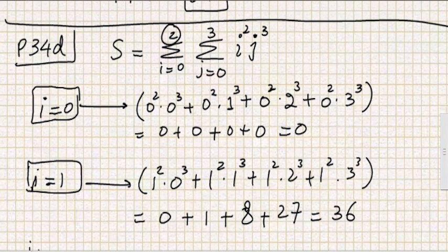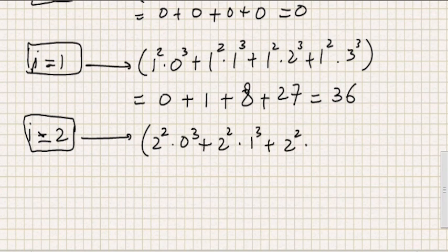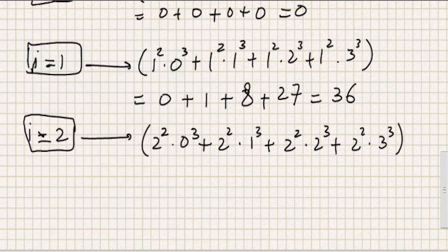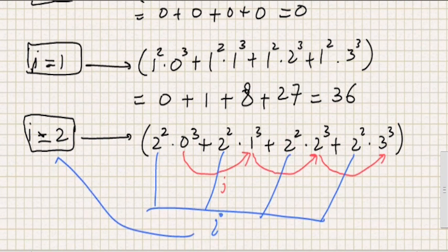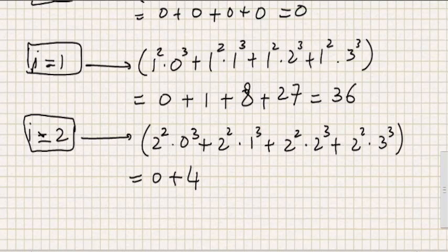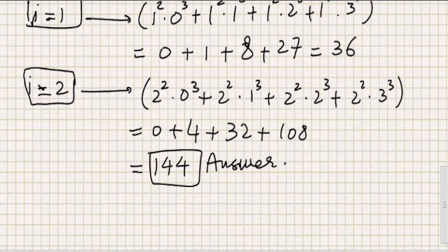Finally, for the last value i=2, we get 2 squared times 0 cubed, plus 2 squared times 1 cubed, plus 2 squared times 2 cubed, plus 2 squared times 3 cubed. The value of j increments from 0 to 3 while i stays fixed at 2. Evaluating this gives 0 plus 4 plus 32 plus 108, which equals 144. So the final answer is 0 + 36 + 144 = 180. I hope you understood the concept of double sums.